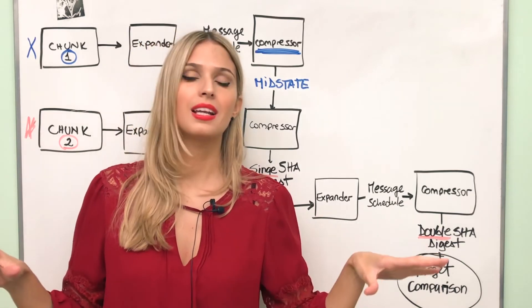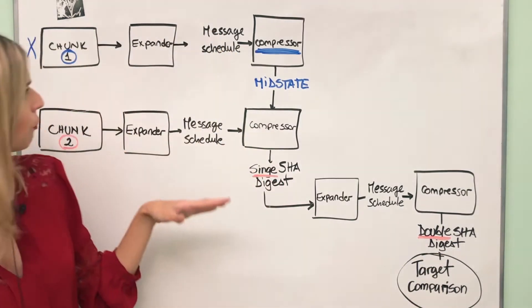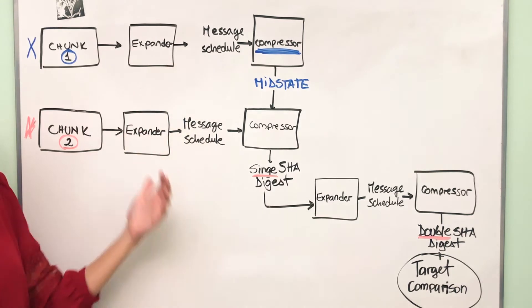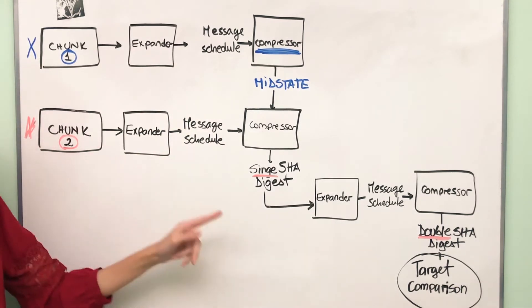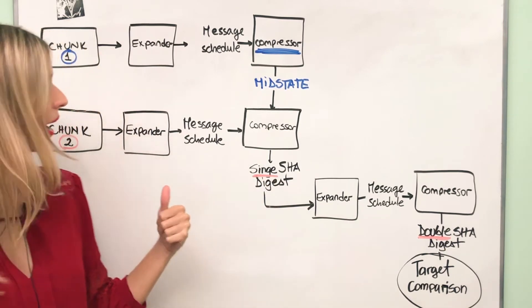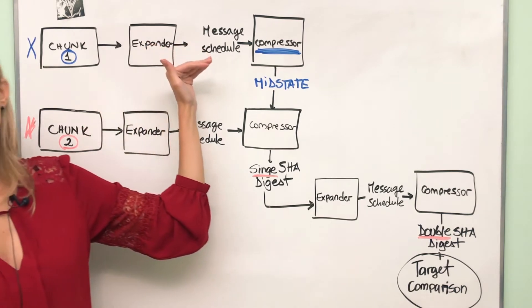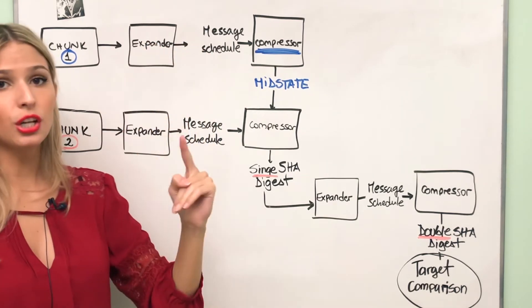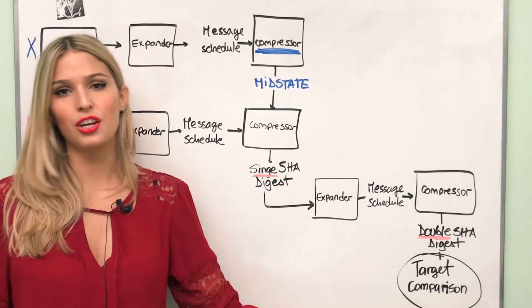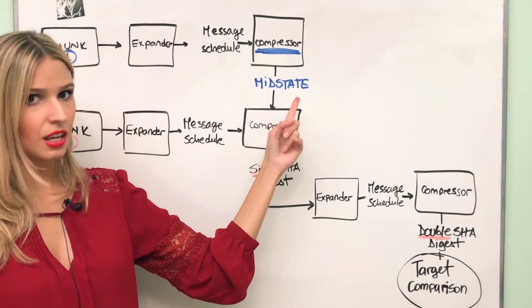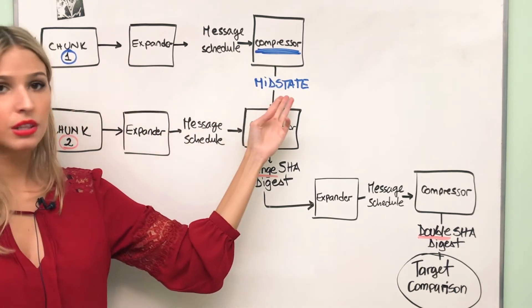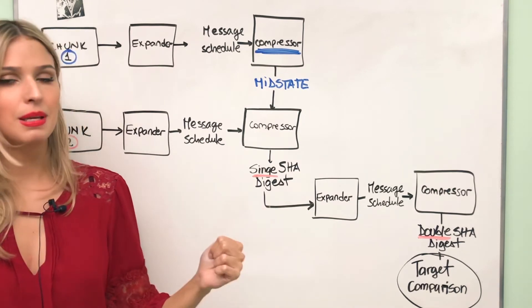Here in this graph we have an illustration of the header of the block, chunk 1 and chunk 2. Chunk 2 is shown in red — this is the part of the computation that is going to be fixed and pre-calculated. Then we're going to be focusing on chunk 1. The key terminology I want you to have in mind is the mid state, which is the output of the blue compressor of chunk 1. Remember this term because we're going to be talking about it in a minute.